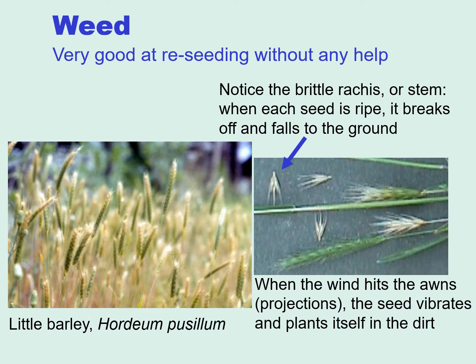Now I can talk about the ways in which weeds differ from domesticates. One of the ways is that weeds are very good at reseeding without any help from humans. With little barley, notice the brittle rachis or stem. When each seed is ripe, the next piece of the rachis breaks off and the seed falls to the ground with the awns up. Then when the wind hits the awns, the seed can actually plant itself.